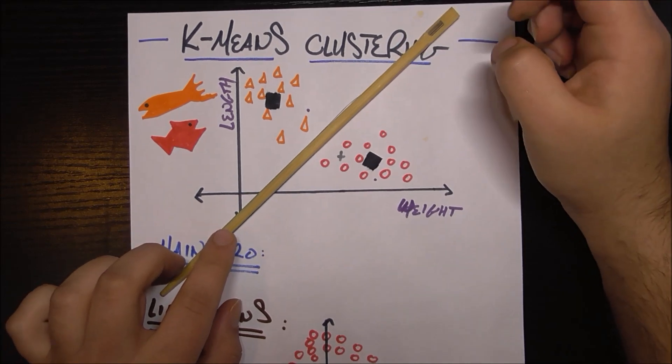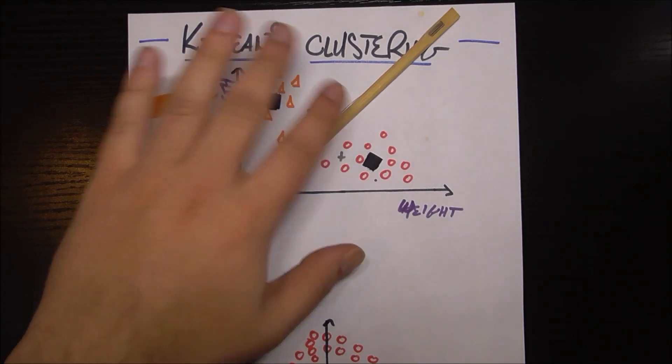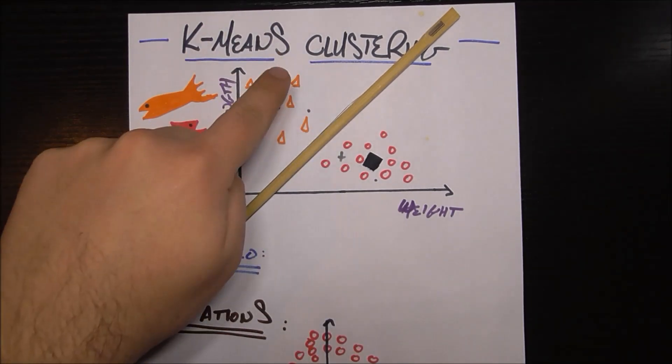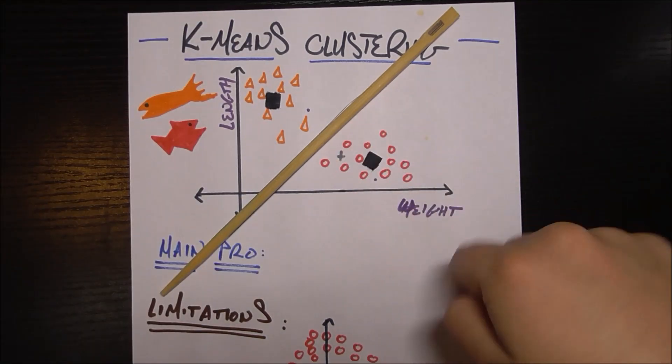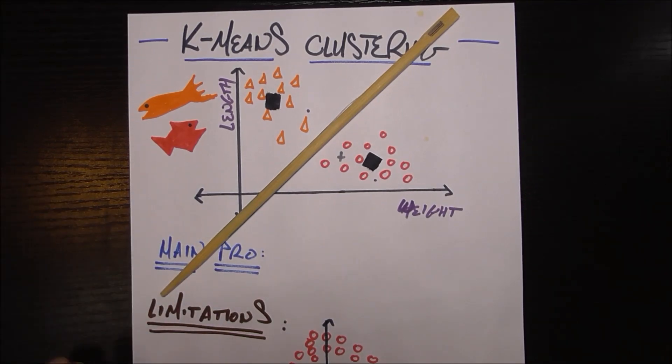So how does the algorithm know when to stop? Basically, it knows when to stop. It'll stop now, because there's been no change in the assignments, which means that all these that were classified as salmon before are still classified as salmon. All these classified as tuna in the last iteration are still classified as tuna. So it can go ahead and stop.